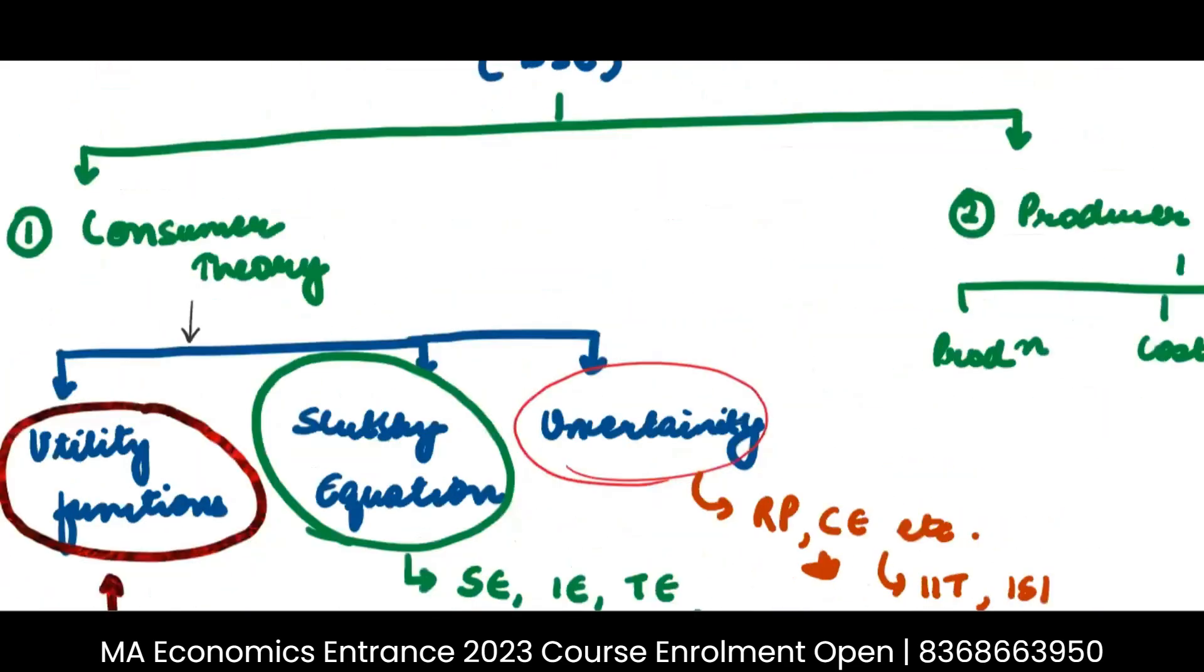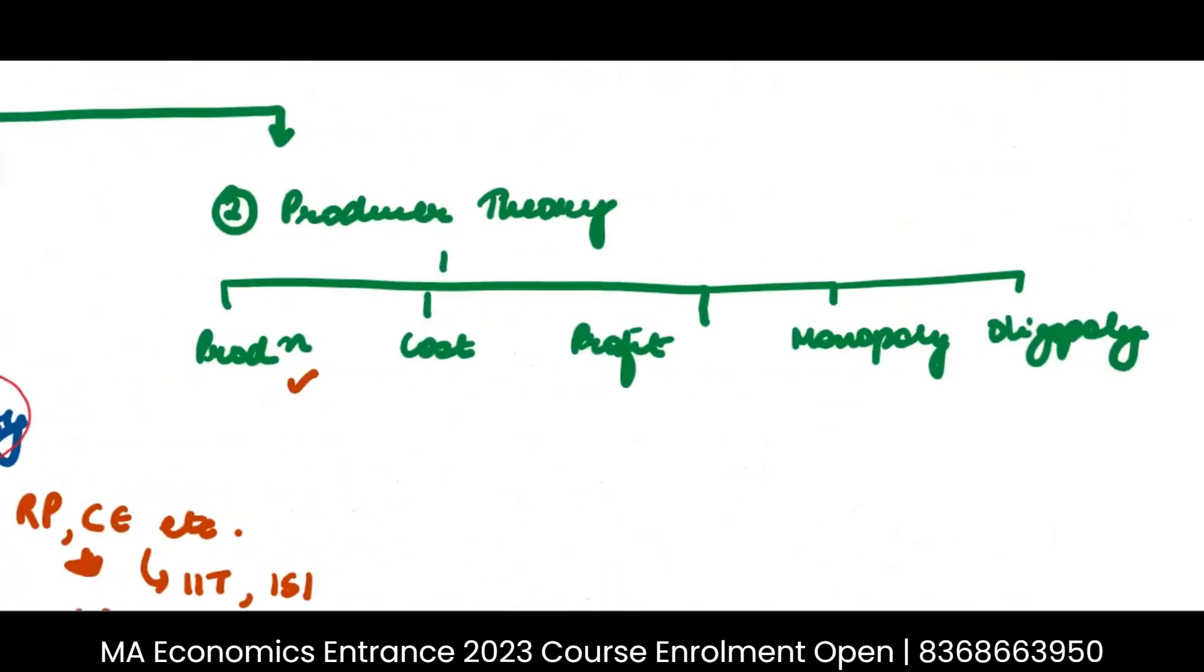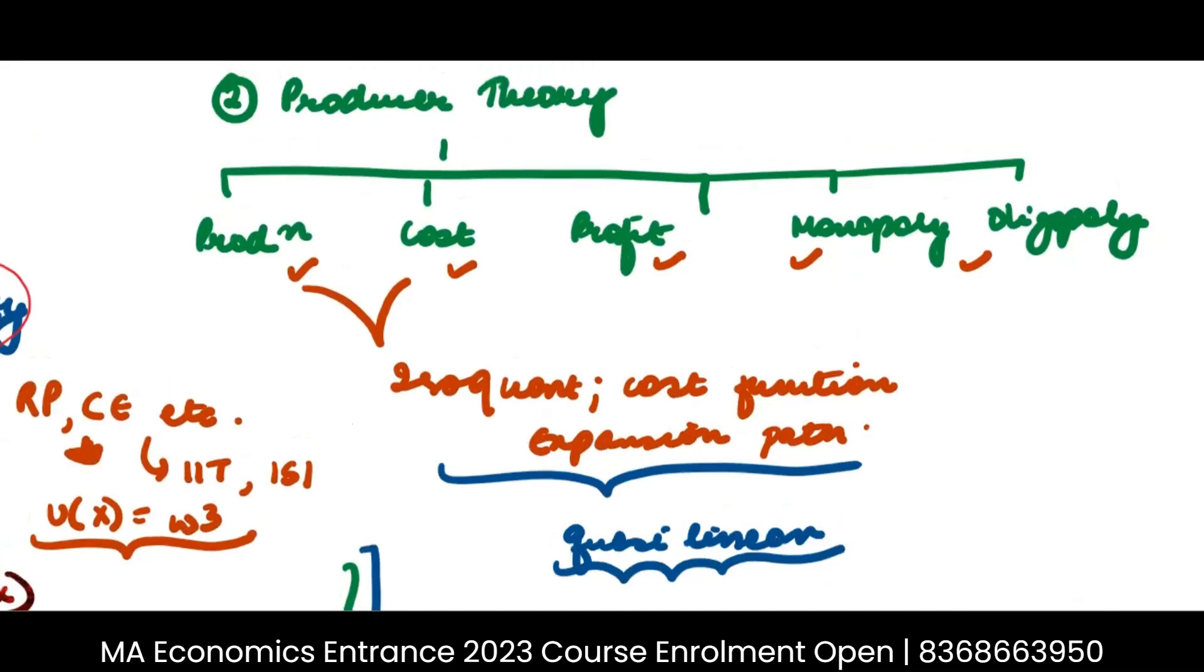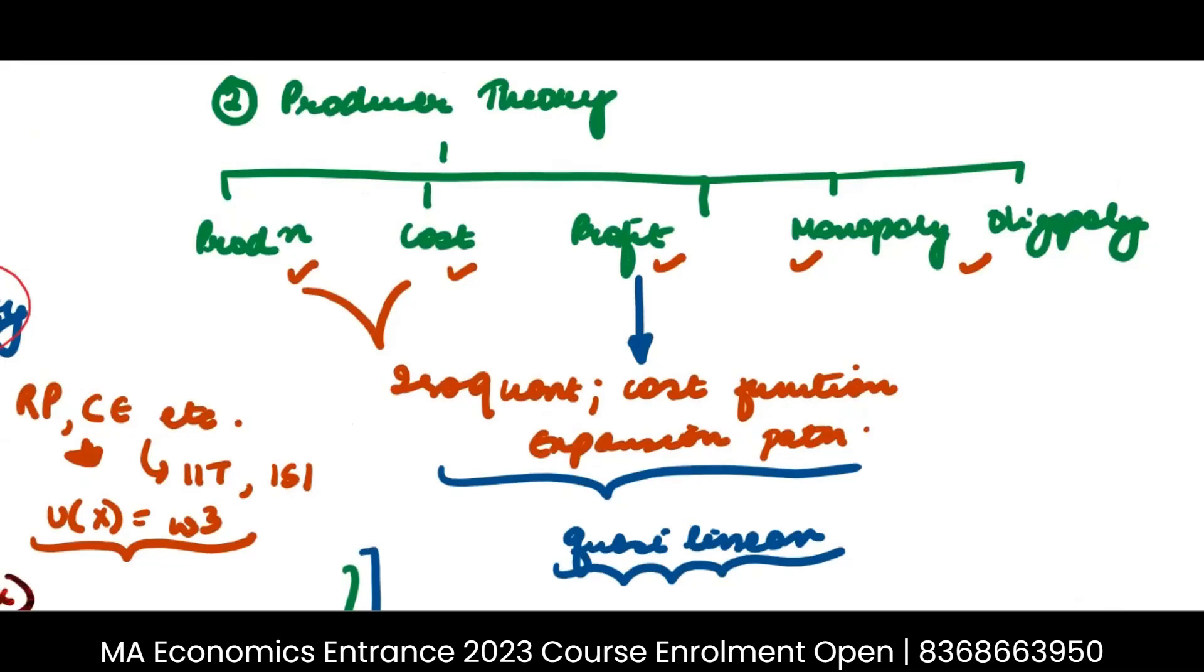Now, when it comes to production theory, so you have to do production, cost, profit, monopoly, oligopoly. Now here, you will definitely see one question which comes on iso-quant. They will ask you to derive the cost function. They may ask you to derive the expansion path. It comes every year. And I may not give you a very simple Cobb-Douglas function. I may go ahead and give you a quasi-linear cost function. And accordingly, I may ask you to go ahead and solve that. It depends. Then profit functions would also be coming out.